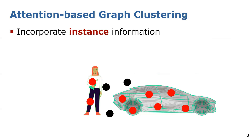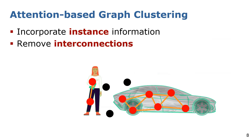To integrate the instance information, we propose attention-based graph clustering. First, we calculate attention weights between all points belonging to the moving class, where we want to predict a weight close to 1 for the same instance and close to 0 for different instances. This already helps to integrate instance information during training and further enhances the segmentation performance. To determine the instance IDs, we construct the radius graph and connect the points locally to reduce interconnections. The final clustering of the radius graph includes the attention weights predicted by our network. We use modularity vertex clustering to remove interconnections between different instances indicated by low attention weights, and the resulting clusters represent the final instance IDs.